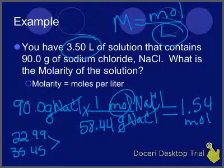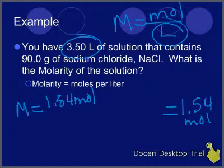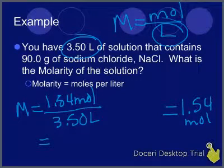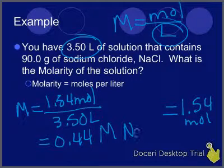Do my significant figures match? 90.0 has 3 significant figures, 1.54 has 3 - yes. Now I'm ready to plug into the equation. I'm in liters and moles, so no more conversions. Molarity equals 1.54 moles divided by 3.50 liters, giving an answer of 0.44 moles per liter, or 0.44 M. Either notation is fine. This is a 0.44 molar solution of sodium chloride.